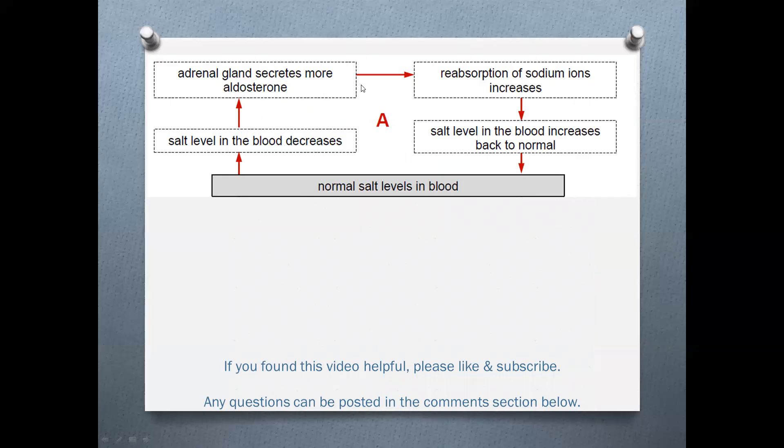The aldosterone works at the target organ of the kidney, which will cause the reabsorption of the sodium ions to increase. The salt level in the blood therefore increases and comes back to normal.